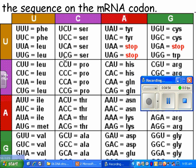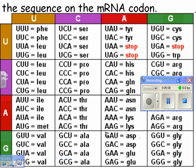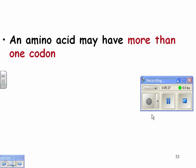There are 64 different possible codes but only 20 amino acids, so there are duplications. Usually the first two letters are the same; the last letter can sometimes be different and still code for the same amino acid. For example, GAU and GAC both code for the same amino acid. Similarly, GCU, GCC, GCA, and GCG all code for alanine. An amino acid may have more than one codon.